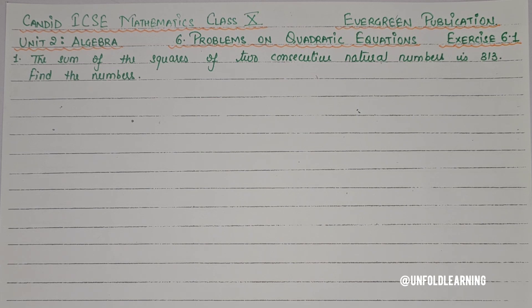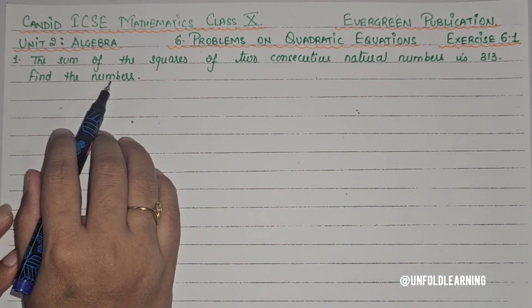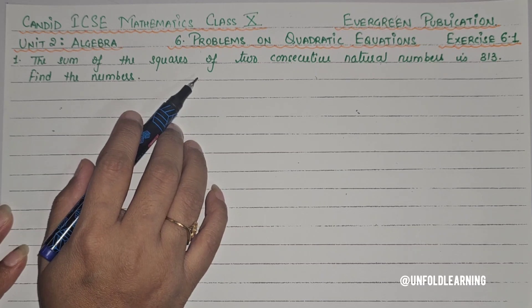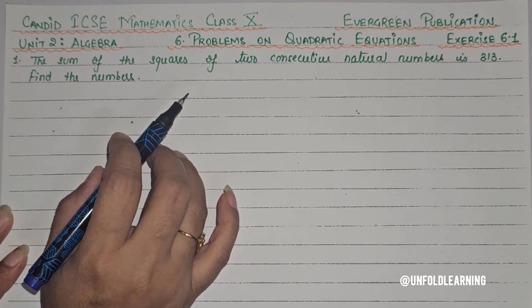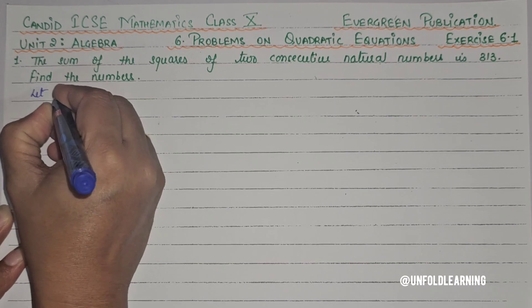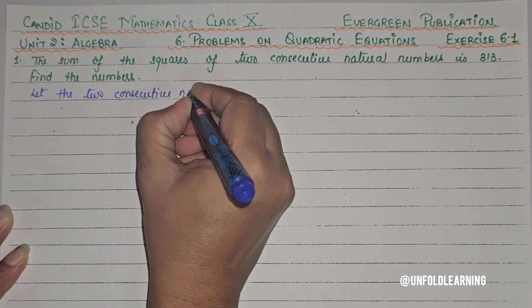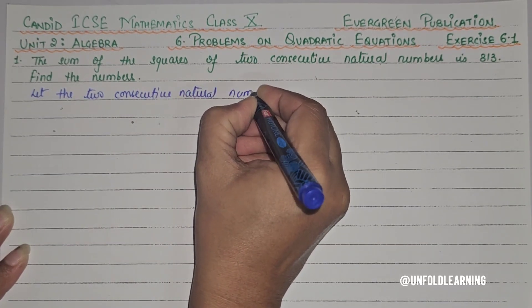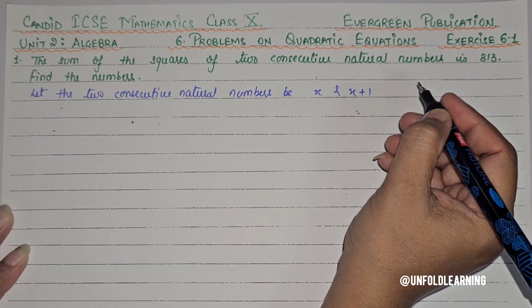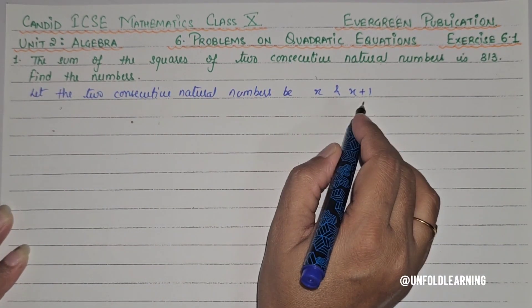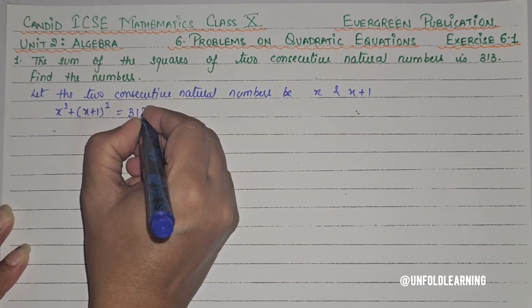First question says: the sum of the squares of 2 consecutive natural numbers is 313. Find the numbers. So here we will take 2 consecutive natural numbers — consecutive like 2 after 3, 3 after 4. Let the 2 consecutive natural numbers be x and x plus 1, so x squared plus (x plus 1) whole squared is 313.